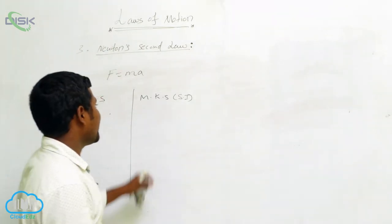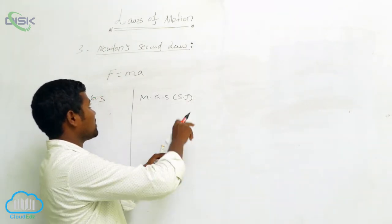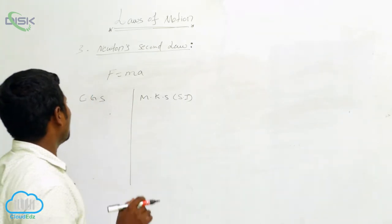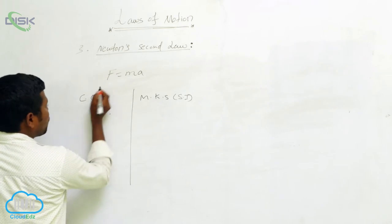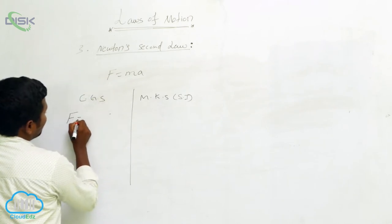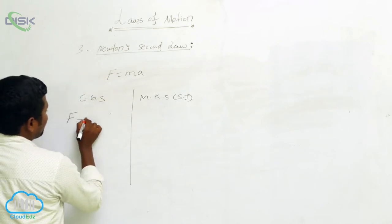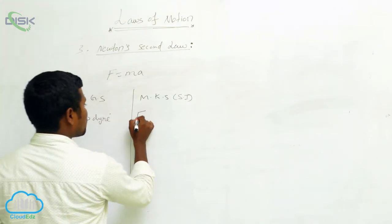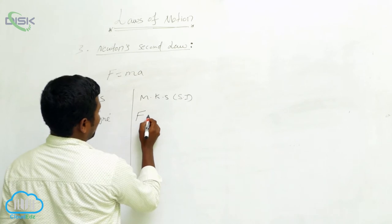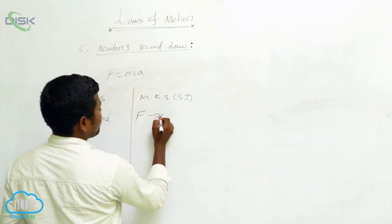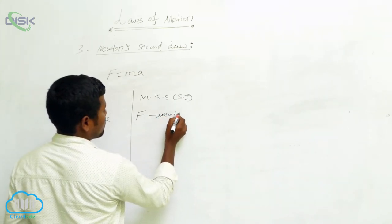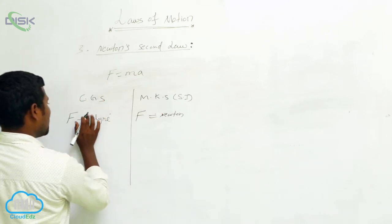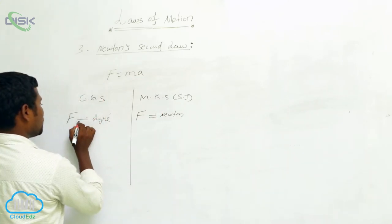After we derive, we can say: in the MKS system, the unit of force is the Newton. In the CGS system, the unit of force is the Dyne. So here, force equals Newton, and here, force equals Dyne.